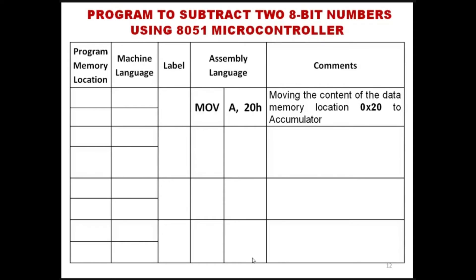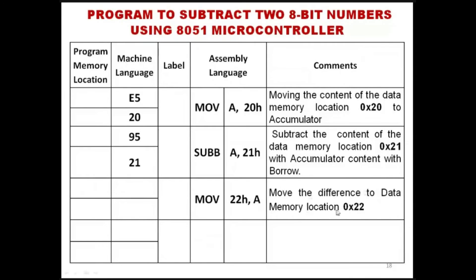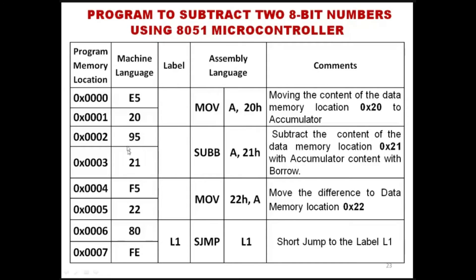MOV A, 20H moves the content of data memory location 20 to accumulator A — its opcode is E5 20. The second instruction SUBB A, 21H is a two-byte instruction with opcode 95 21, which subtracts the content of accumulator with the content of memory location 21 and stores the difference in the accumulator. The third instruction MOV 22H, A uses opcode F5 22 — also a two-byte instruction. The short jump instruction uses opcode 80 and jumps back, so the program loops and the expected difference will be available in data memory location 22.